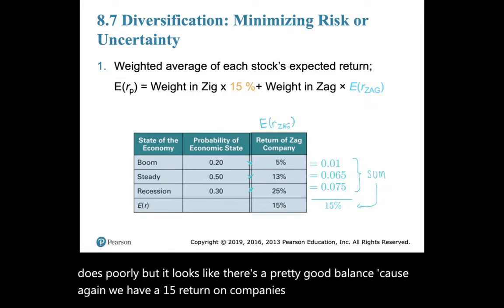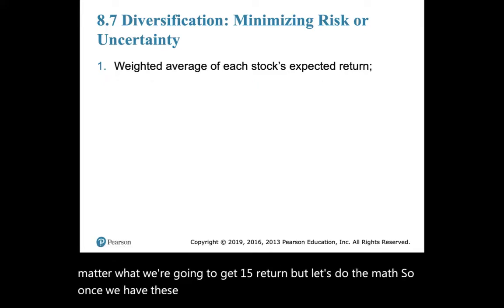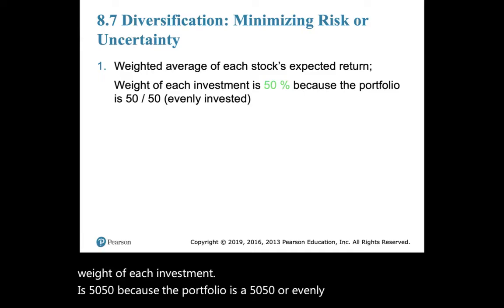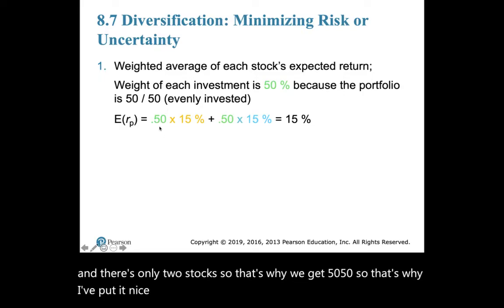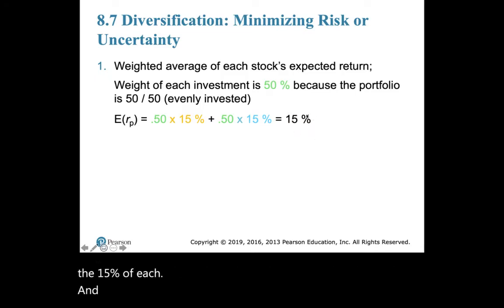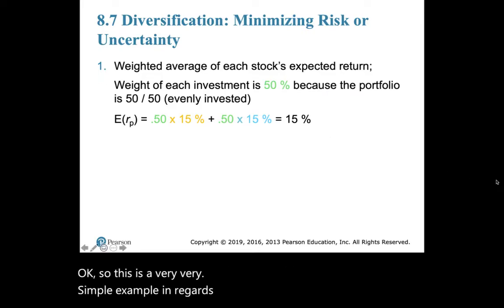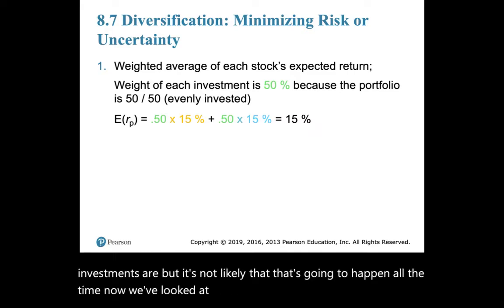Once we have the two 15% expected returns, we apply the 50/50 weights — since the portfolio is evenly invested in both stocks — and get a portfolio expected return of 15%. This is a very simple and mathematically balanced example. It's not likely that results will always be this clean, but it illustrates the concept well.